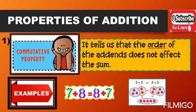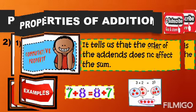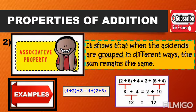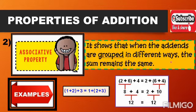Let's now proceed to the second property of addition — the associative property of addition. It states that when the addends are grouped in different ways, the sum remains the same. Changing the grouping of the addends does not affect the sum. The key term here is group or grouping. If you see this word, it means you are applying associative property of addition.